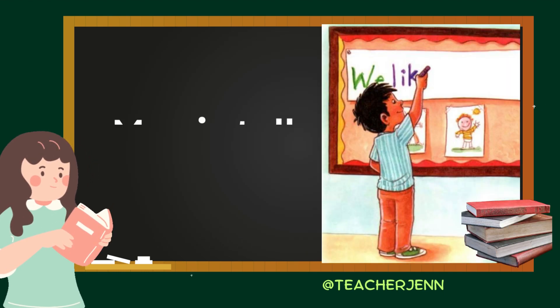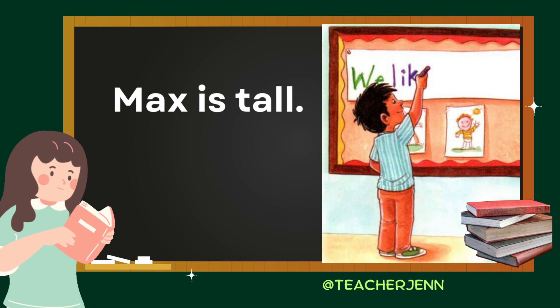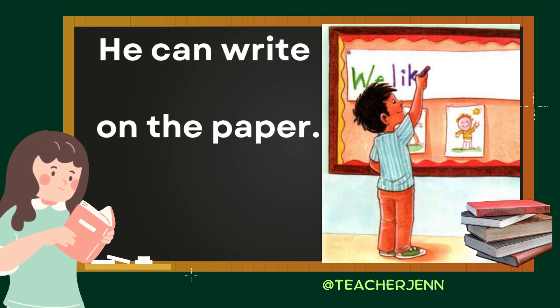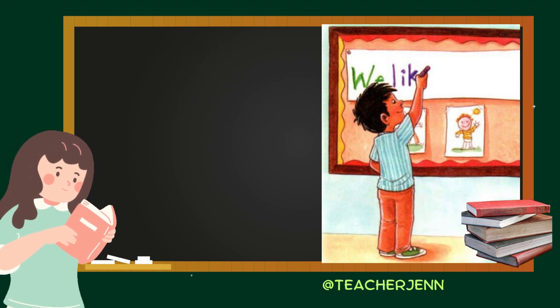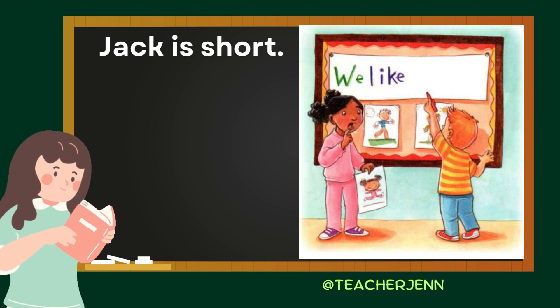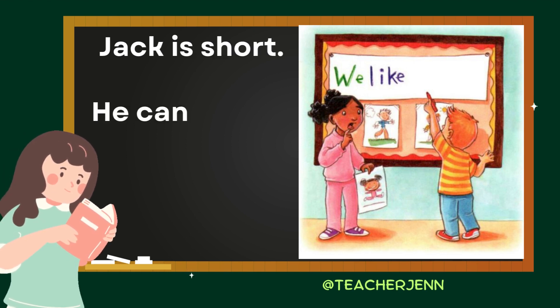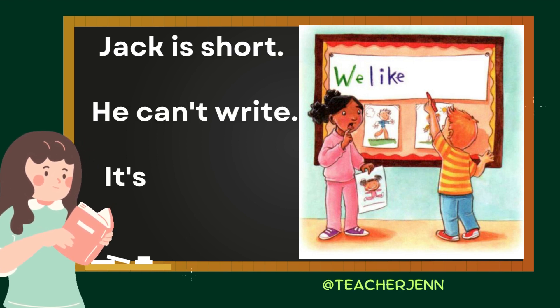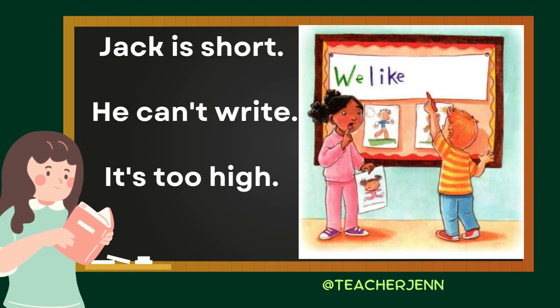Max is tall. He can write on the paper. Jack is short. He can't write. It's too high.